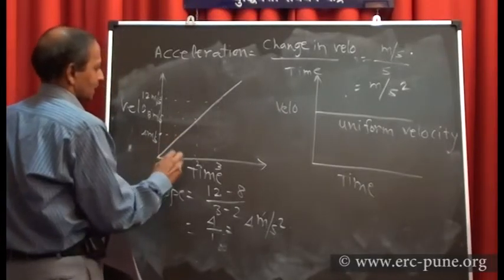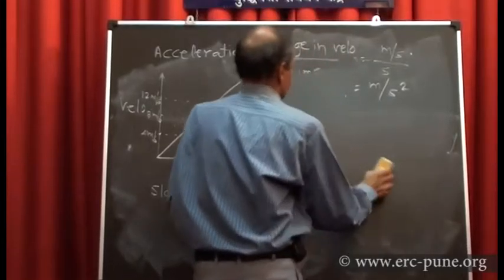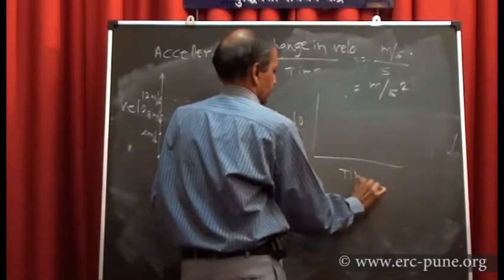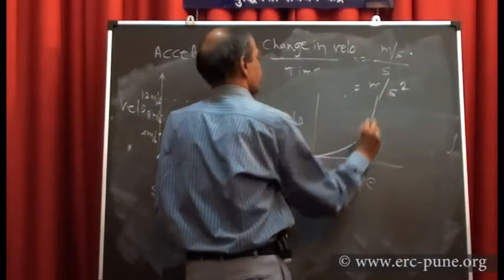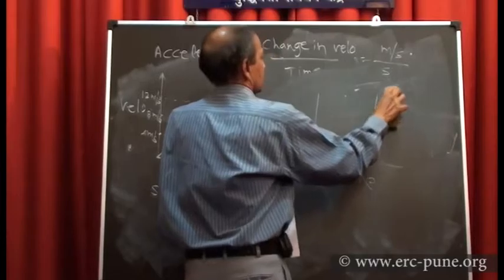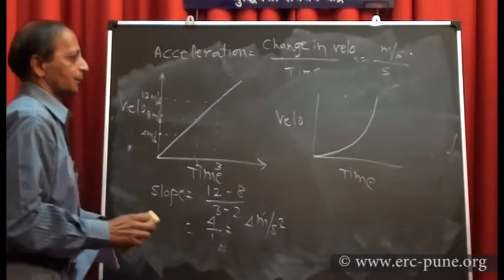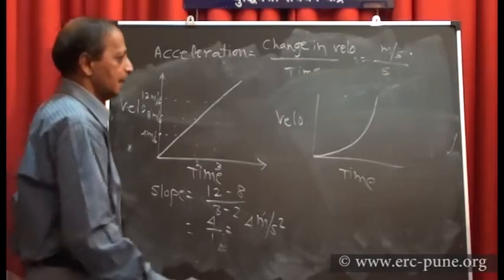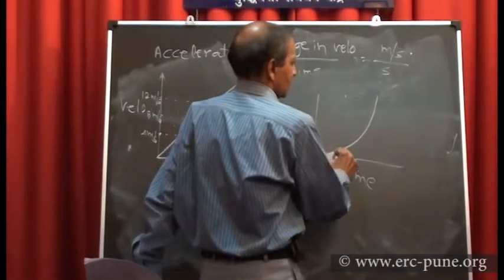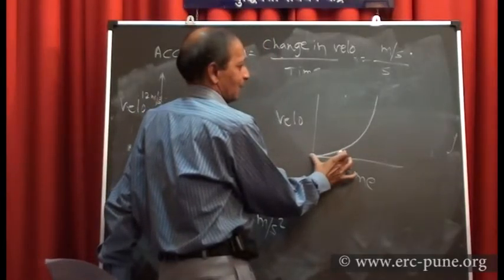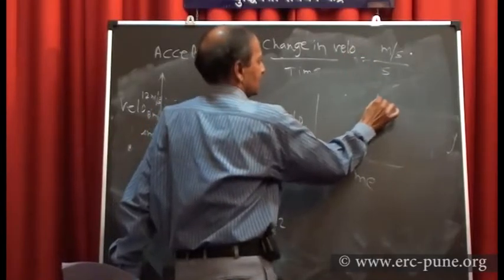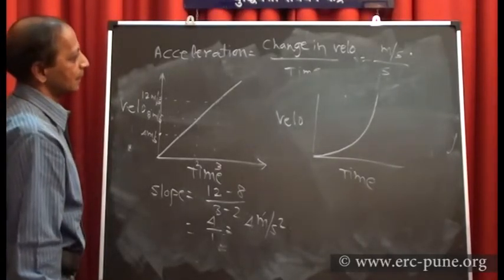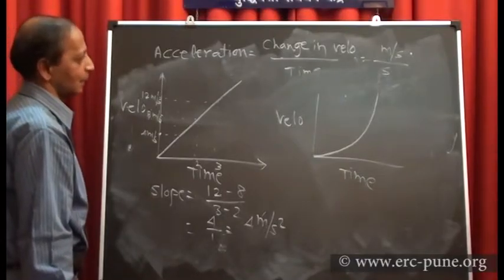If instead you get a curved velocity-time graph that curves upward, the velocity is not increasing uniformly. Initially the increase in velocity was less, but after each second the velocity is increasing tremendously. If the velocity-time graph is a curve, the conclusion is that velocity is not increasing uniformly.